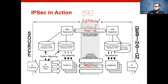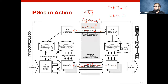When we say that NAT traversal is enabled, this means that the packets use UDP port 4500.